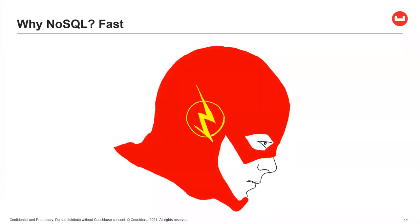Speed is another reason people talk about a lot. More specifically, we're talking about latency and concurrency. NoSQL systems are optimized for specific access patterns. Couchbase specifically has a built-in cache and memory-first architecture, which gives it really good speed. The architecture and integrated cache are what give it that speed — and how you can take advantage of that is what I want to focus on.